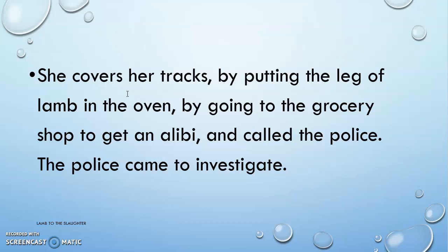She starts covering her tracks. She does not lose her composure — she does not cry, shout, or call the police right away. Instead she thinks about how she can save herself. She puts the leg of the lamb in the oven to be roasted, then goes to the grocery store to find an alibi — a witness who, when called in court, can say that Mary was at the shop buying something. She then comes home and calls the police. She is very calm and composed, which is not normal at all, especially when you have killed your own husband. She is a person who is not easily rattled.